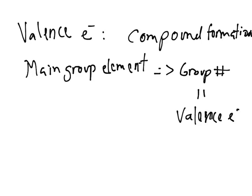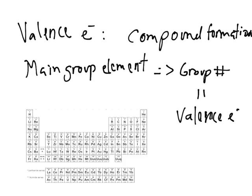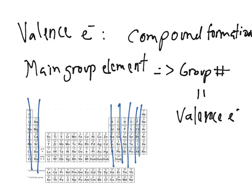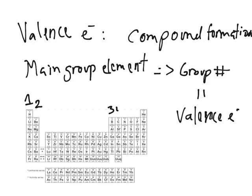So let's get a periodic table. So our main group elements are this. Those are the groups that we're going to talk about. And the valence electrons will be one for this one, two, three, four, five, six, seven. And we don't count our noble gases as a group because they have no valence electrons.